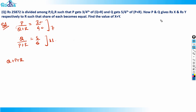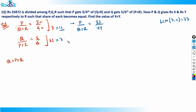To make 7 and 11 the same, I'll use their LCM which is 77. Multiply the first ratio by 11: P upon Q plus R becomes 33 by 44. Multiply the second ratio by 7: Q upon P plus R becomes 35 by 42. Now in both cases the total amount is 77, as it should be since P plus Q plus R must be the same.